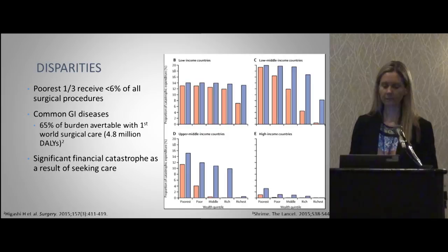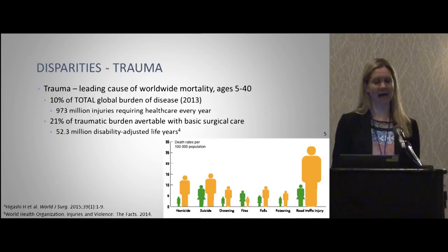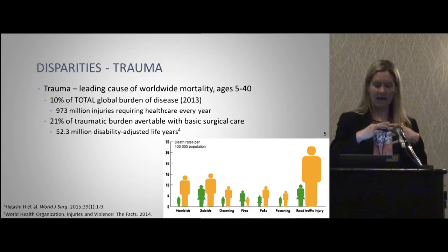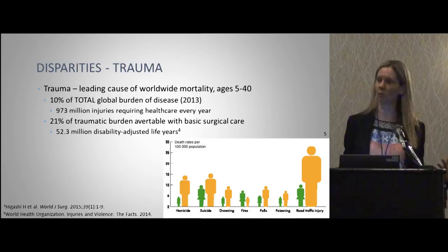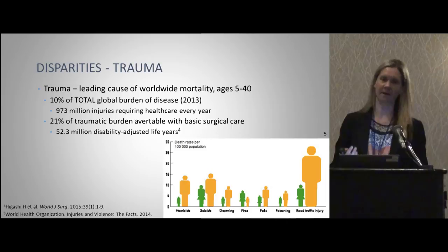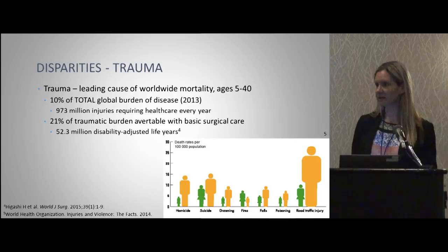Switching to disparities specifically in trauma — this is even more dramatic. When the World Health Organization looks at the total burden of disease across all medical and surgical diseases worldwide, 10% of the global burden of disease is due to trauma: injuries like broken legs, broken arms, hernias, and problems after cesarean sections. Trauma accounts for 10% of all disease in the world, and it is the leading cause of death for people between the ages of 5 and 40.